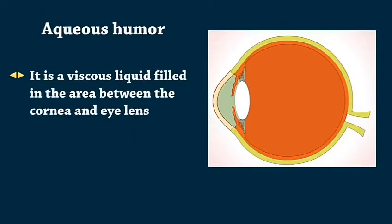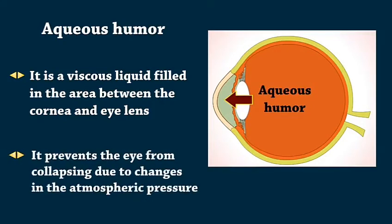Aqueous humor is a viscous liquid filled in the area between the cornea and eye lens. It prevents the eye from collapsing due to changes in the atmospheric pressure.